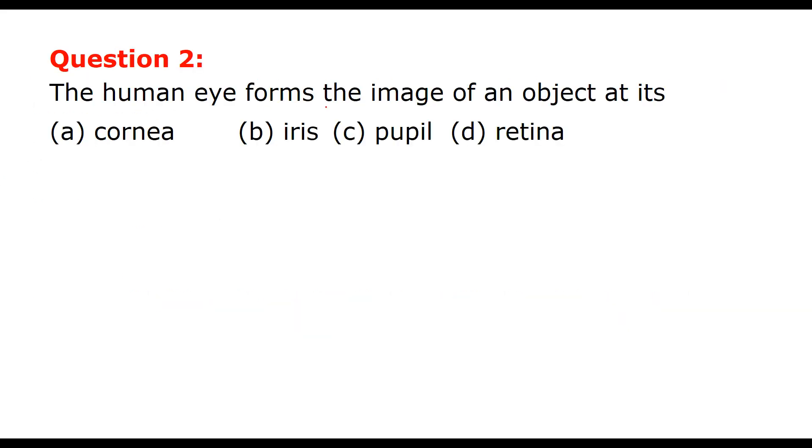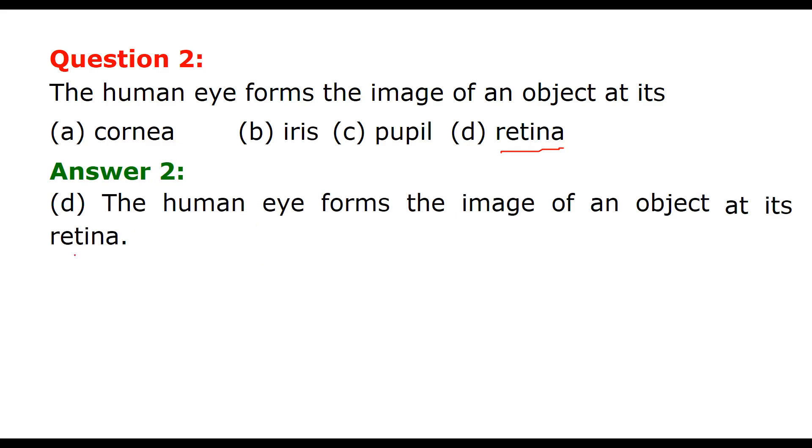The human eye forms the image of an object at its retina. Retina is the place where human eye forms the image of an object. The answer is retina.